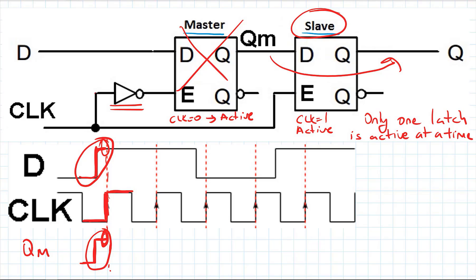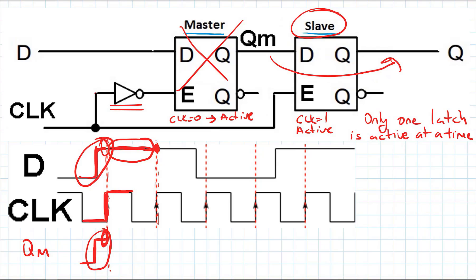Until the next clock edge, whatever happens to D doesn't matter - only the value right on the rising edge is captured. Just before each positive edge, we sample the D value, and that value is transferred to the output. So on each positive edge, the current D value is sampled and becomes the output.